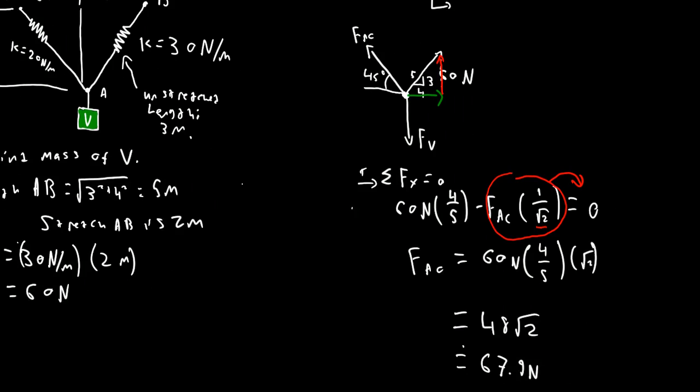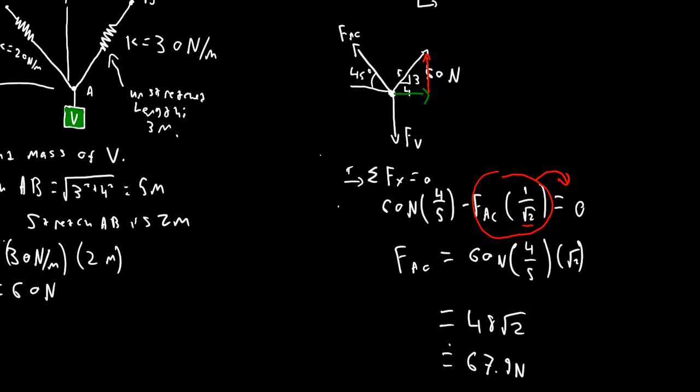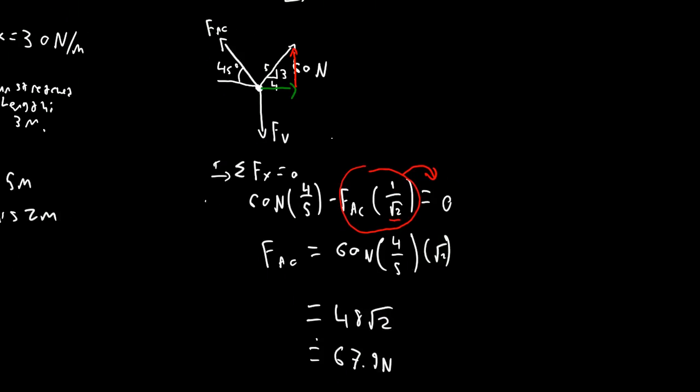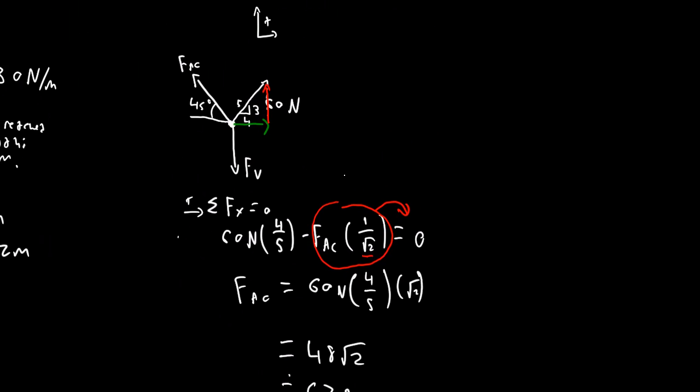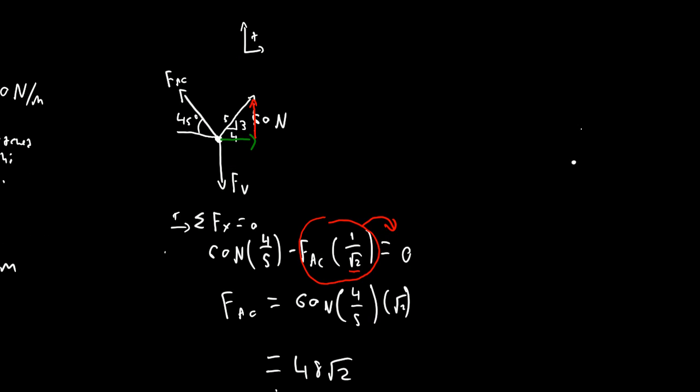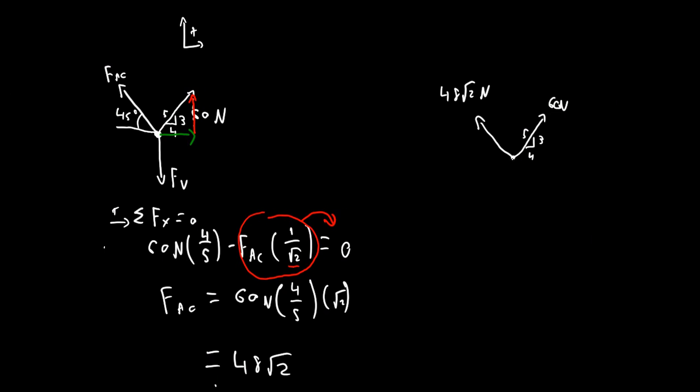Anyway, now we want to find our FV right here. That's what we were looking for in the first place. And once we have that, then we can very easily determine the mass of the box of veggies. We'll have our 60 newtons, 3 4 5 triangle, and we now have that this is 48 root 2 newtons. I like to be exact. And we'll have FV down here.